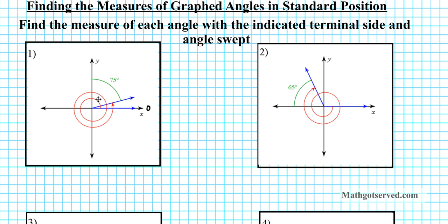How many degrees is two complete full circular rotations? The first circular rotation is 360 degrees because we know that the full circle is 360. If this were the terminal side, the angle would be 360 degrees. If you rotate again to this point, the second full rotation adds another 360, which is equivalent to 720 degrees.